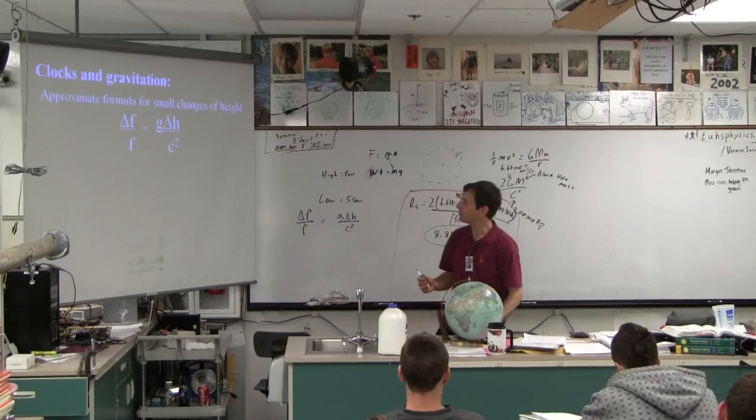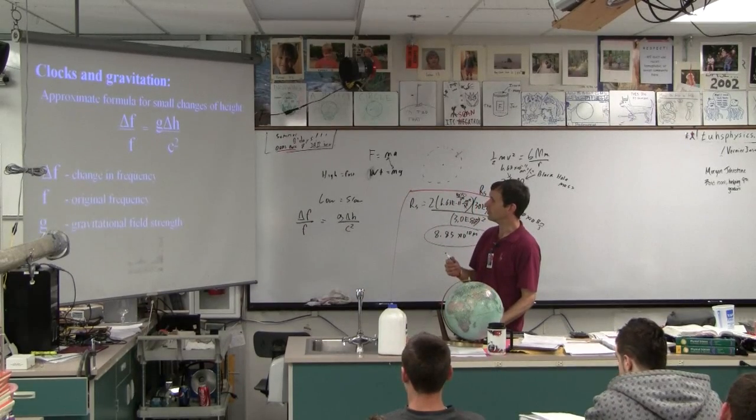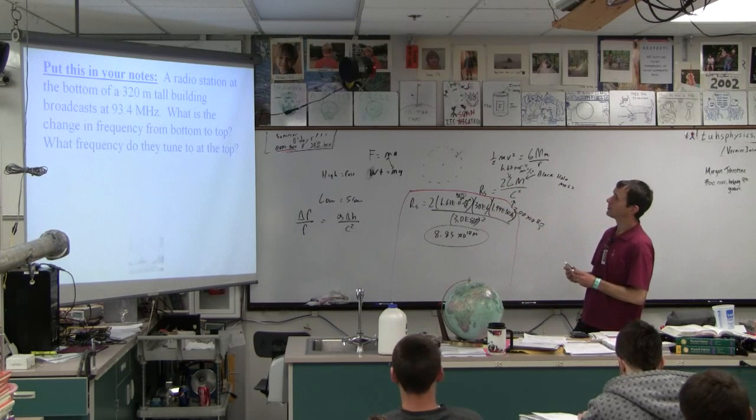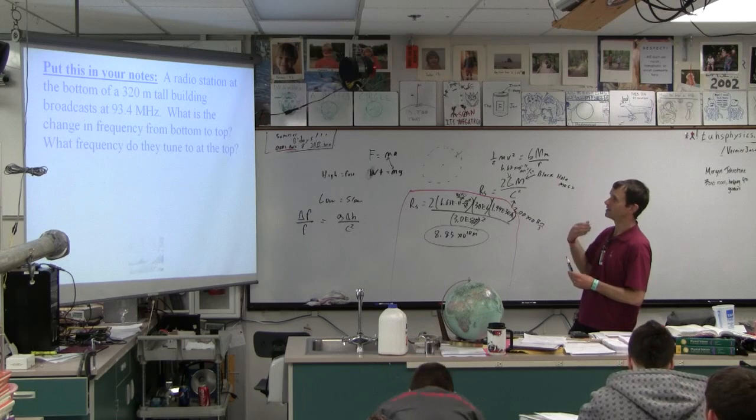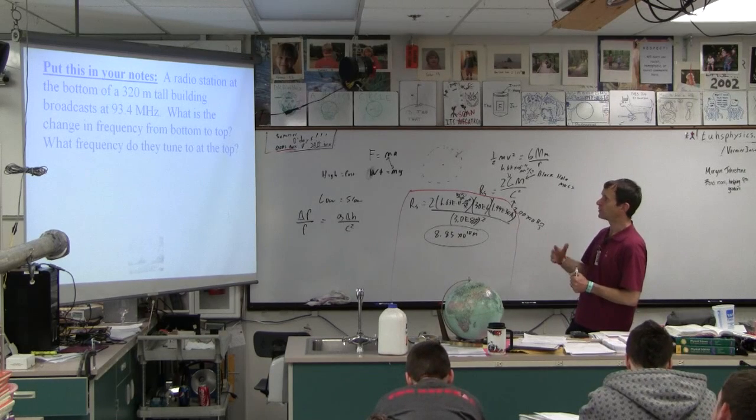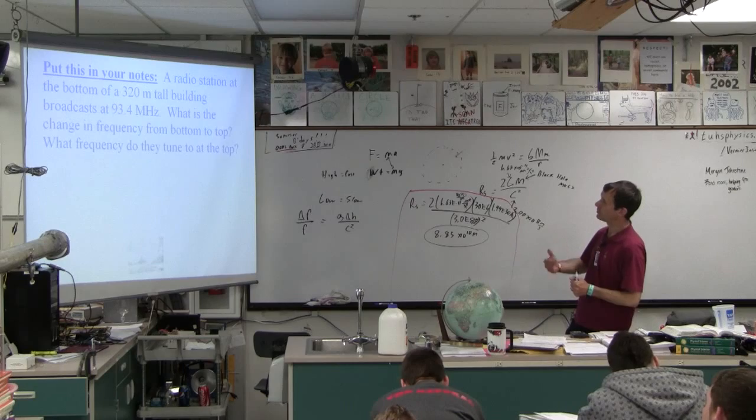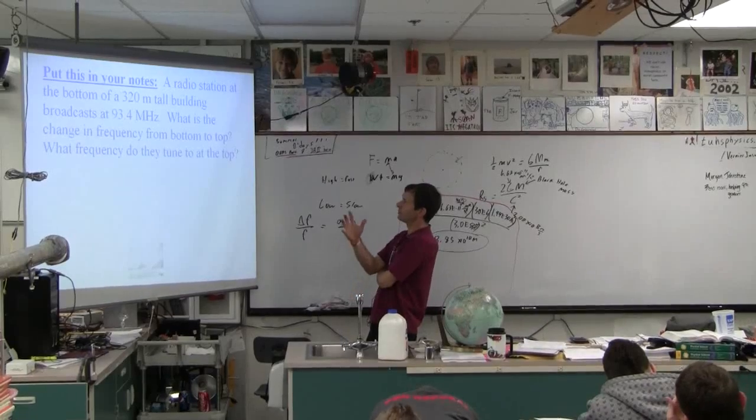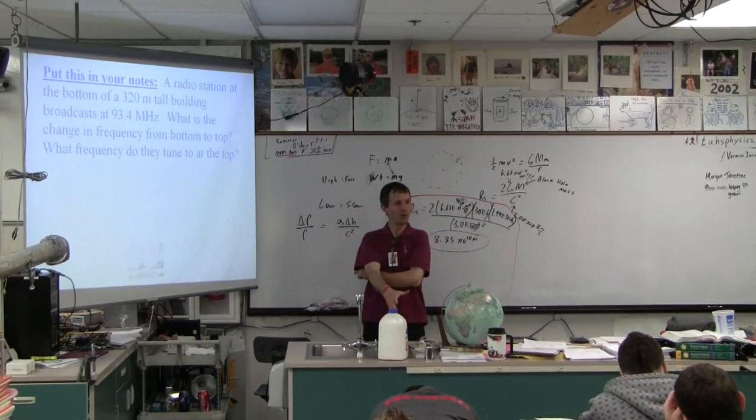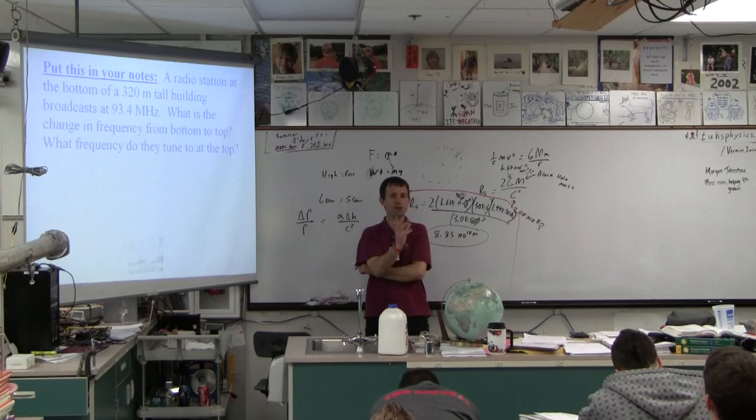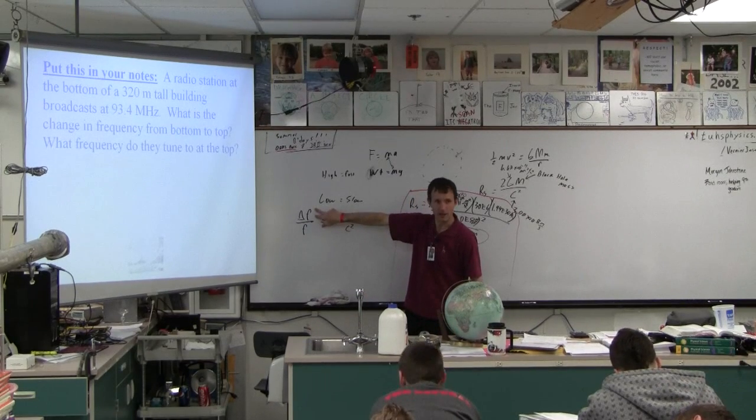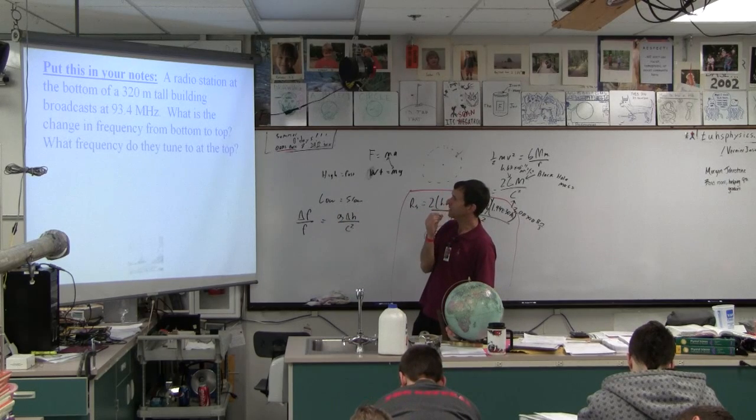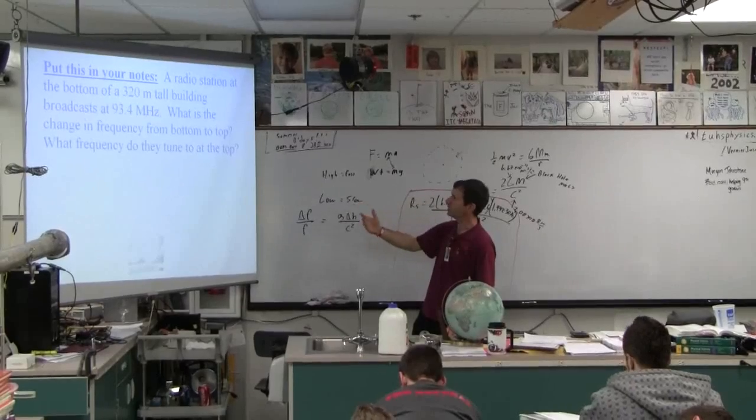So I think, don't you have another example? You have this in your little note guide. Let's put this example in there, right? A radio station at the bottom of a 320 meter tall building broadcasts at 93.4 megahertz. What is the change in frequency from the top to the bottom? What frequency do they tune at at the top? Well, the radio stations down there, we're at the top. So isn't it a low clock? Won't it run slow? Yeah. So whatever shift in frequency we get, we're going to make it less than that. It's going to be a slow, low clock, right? Okay. From the bottom to the top. And then the frequency they tune to at the top will be a little bit less, right?